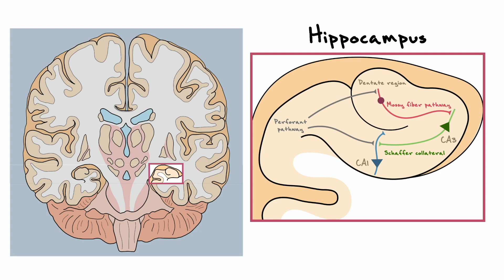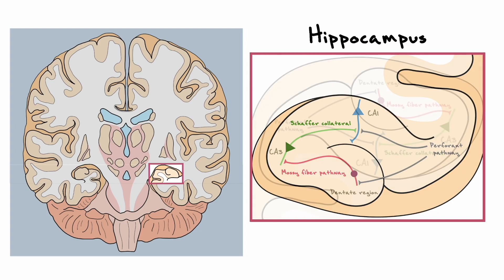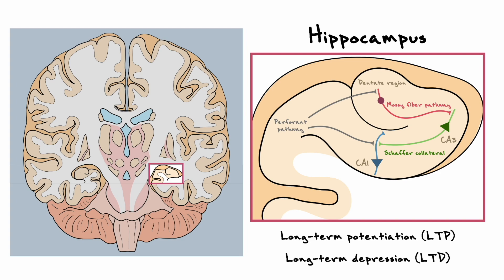Textbooks will often flip this diagram, and most likely you have seen the hippocampus in that orientation. Since we do not really consider the anatomical implications, I will use the unflipped orientation as it is more faithful to the coronal section. In this circuit, two general forms of long-term plasticity have been discovered: long-term potentiation and long-term depression. Let's begin our discussion by first discussing LTP and what experiments allow us to see it.